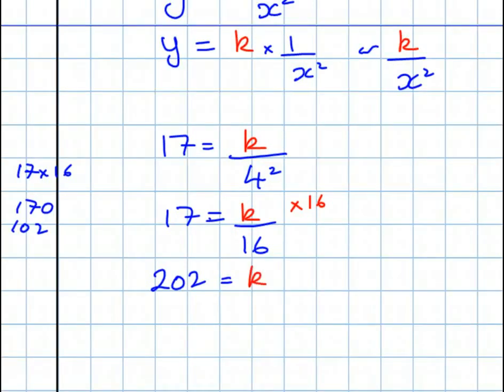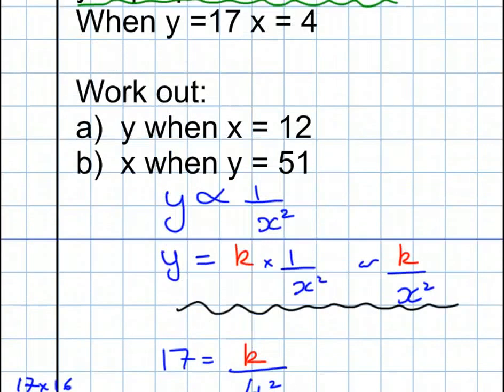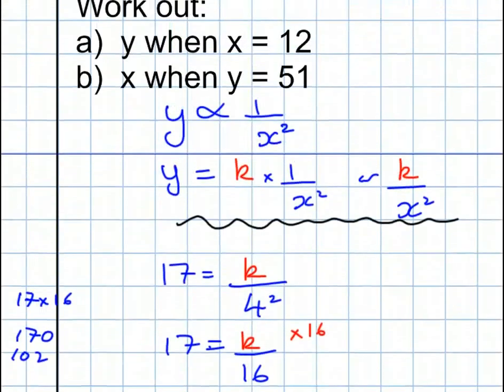K divided by 16 times 16 is K. So now I've found the value of K. And if we go back to our original proportion equation, Y is equal to K over X squared. And here we have it. Y is equal to 202 over X squared. Now, two questions to answer.